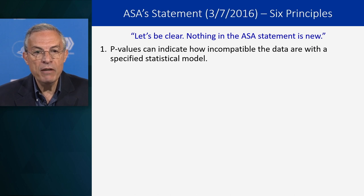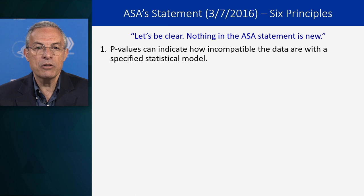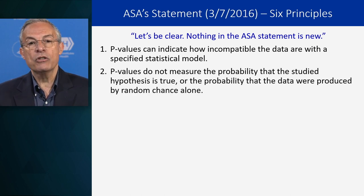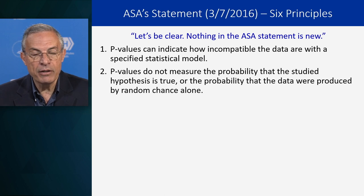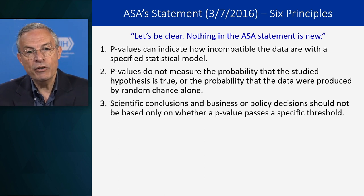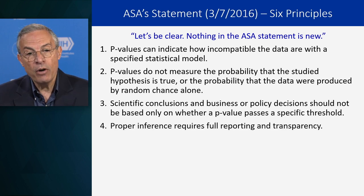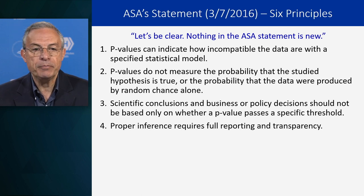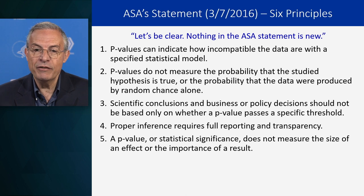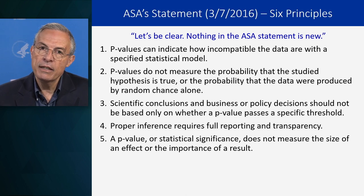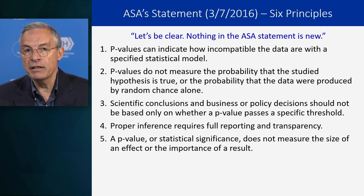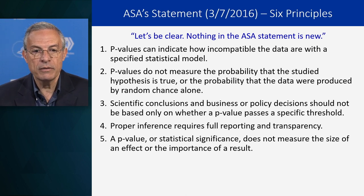The six principles were: One, p-values can indicate how incompatible the data are with a specified statistical model. Two, p-values do not measure the probability that the studied hypothesis is true or the probability that the data were produced by random chance alone — that's what we talked about earlier. Three, scientific conclusions and business or policy decisions should not be based only on whether a p-value passes a specific threshold.